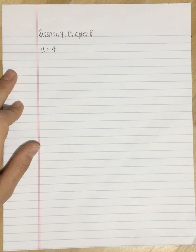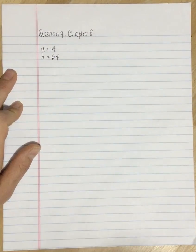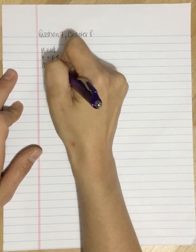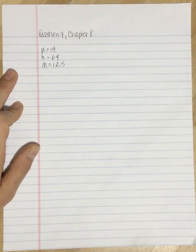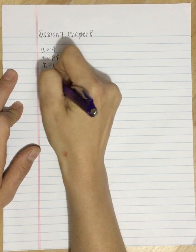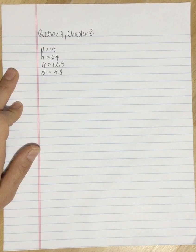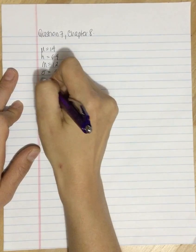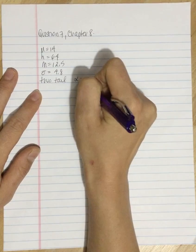To determine whether this average has changed in the past 10 years, researchers selected a sample of 64 students and obtained an average of m equals 12.5 hours. If the standard deviation for the distribution is sigma equals 4.8 hours per week, does this sample indicate a significant change in the number of hours spent studying? Use a two-tailed test with an alpha of 0.05.